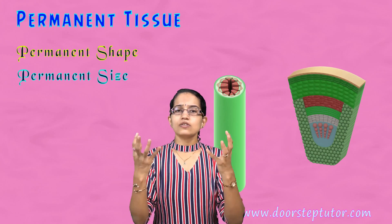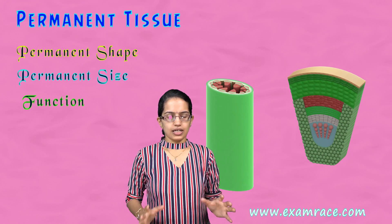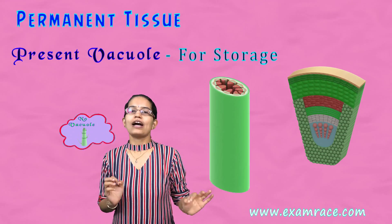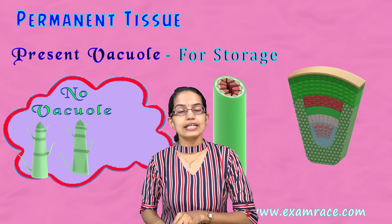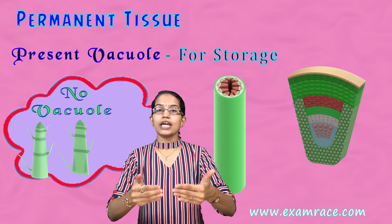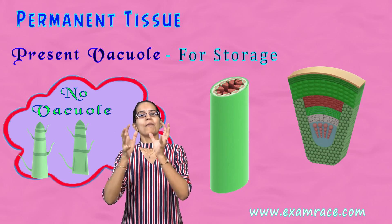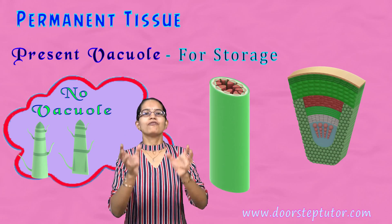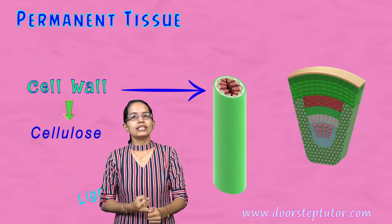These permanent tissues have vacuoles for storage. No vacuole is present in meristematic tissues. Be very careful with these words because they are a very important part of your MCQs. When you say meristematic tissues, there is no vacuole present. However, permanent tissues have a role in storage and therefore have vacuoles. The cell wall is made up of either cellulose, lignin, or suberin — we will understand each of these components one by one.